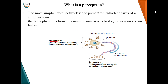Generally speaking, a perceptron is a neural network that contains only one neuron. We'll talk about only a single neuron in a neural network, which is called a perceptron, and then we'll move on to the next session where we'll talk about n number of neurons. The most simple neural network is the perceptron, which consists of a single neuron, and it functions in a similar manner to a biological neuron as shown below.